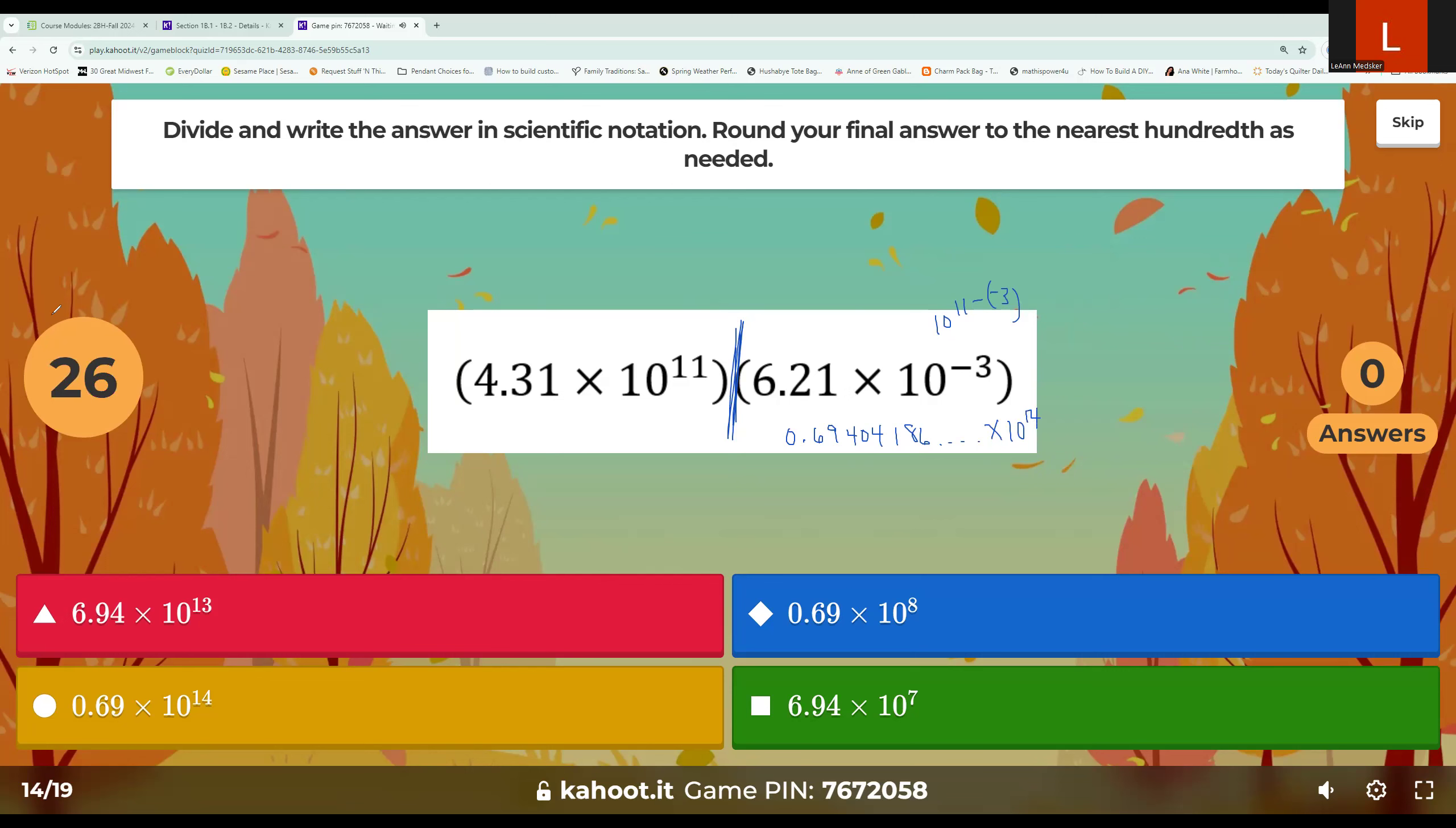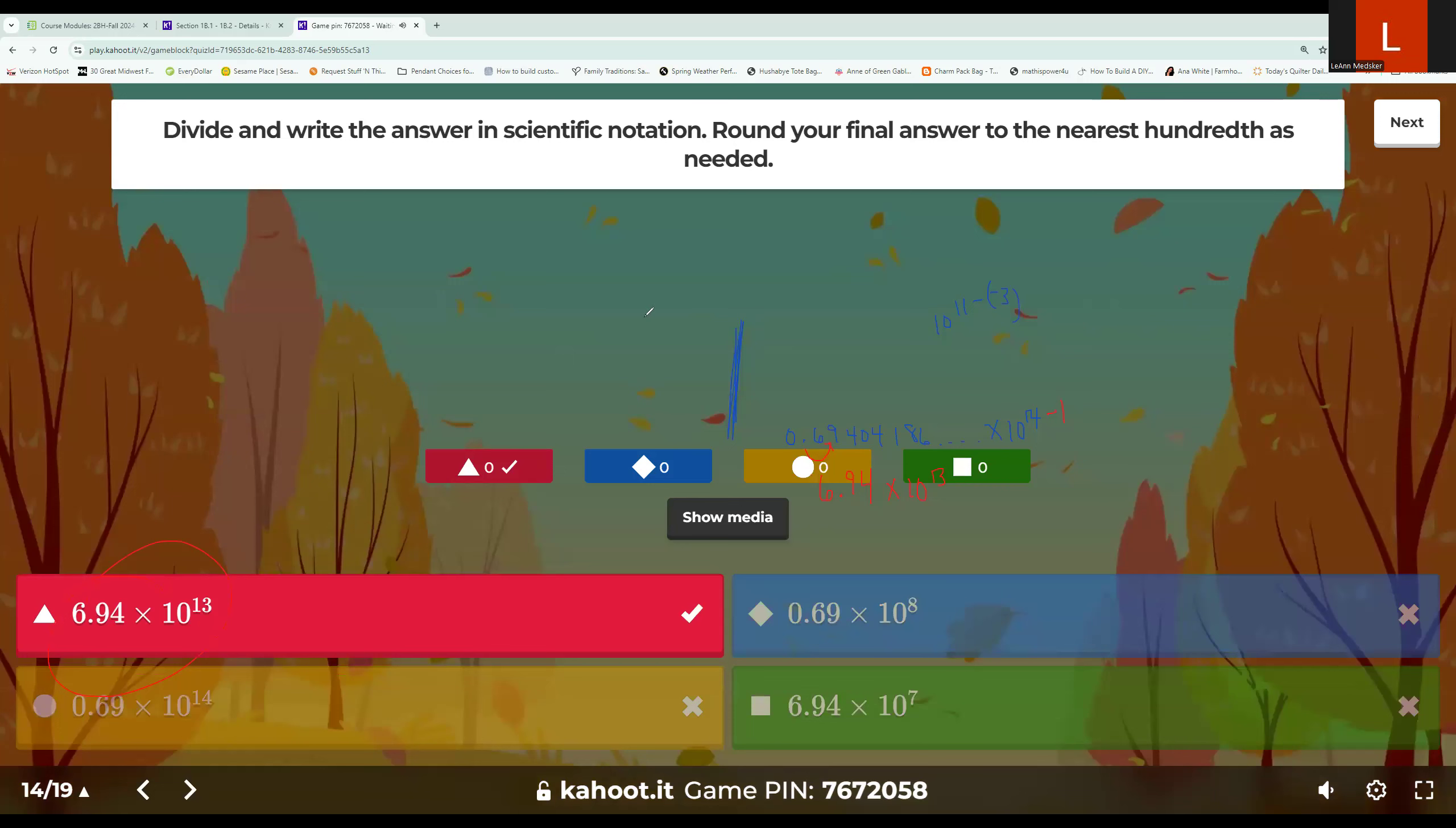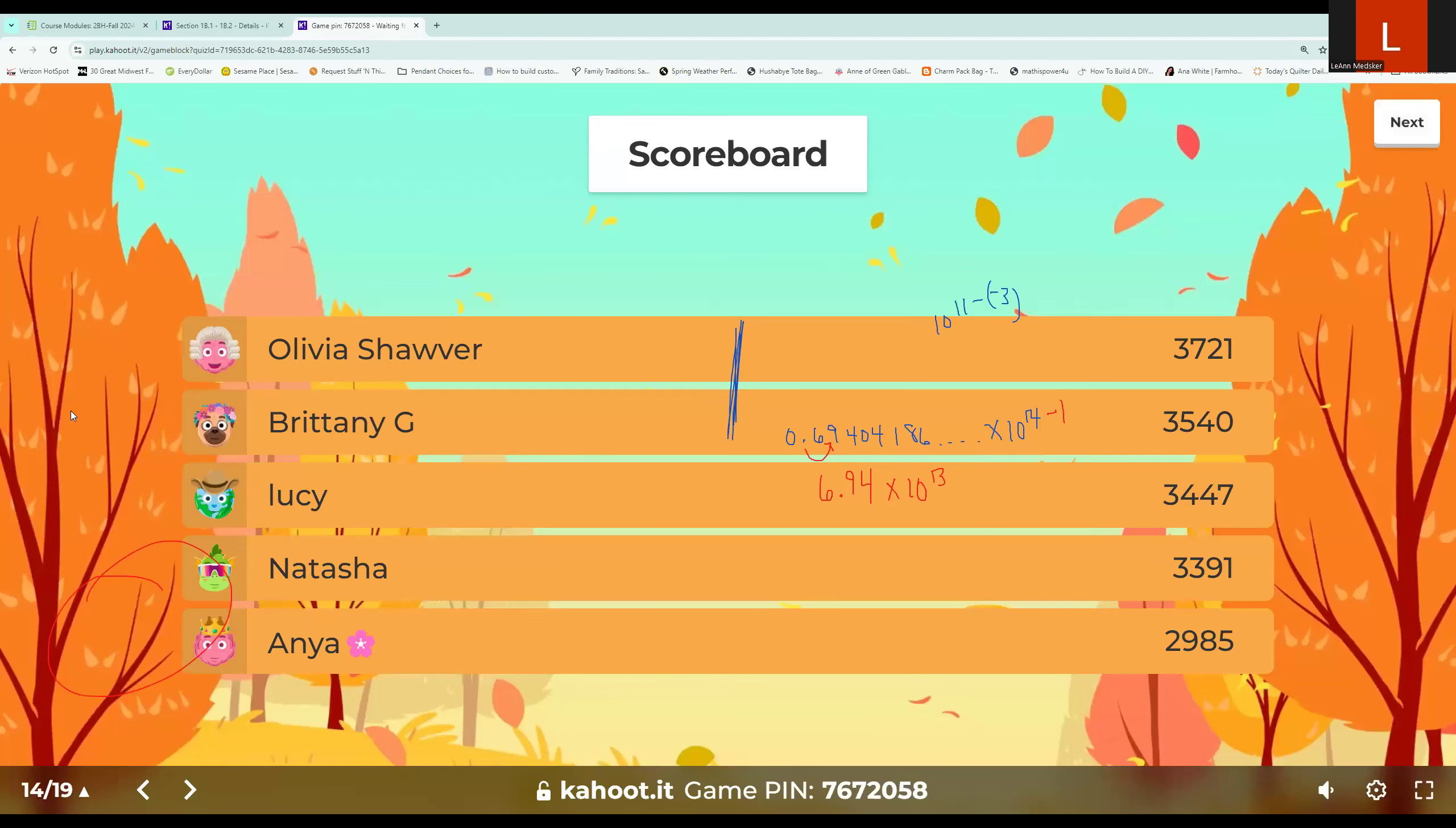Unfortunately, though, this is not proper scientific notation. I need that 6 to be in front of the decimal point. Moving to the right, one position subtracts 1 from your power. And then you can round it to the nearest hundredth. So 6.9, the 4 is in the hundredths place. There is a zero behind it. So it's going to stay a 4 and then times 10 to the 13. So that is this red triangle option. Sorry, that one took me almost the whole time. Okay, so let's move on to our next piece.